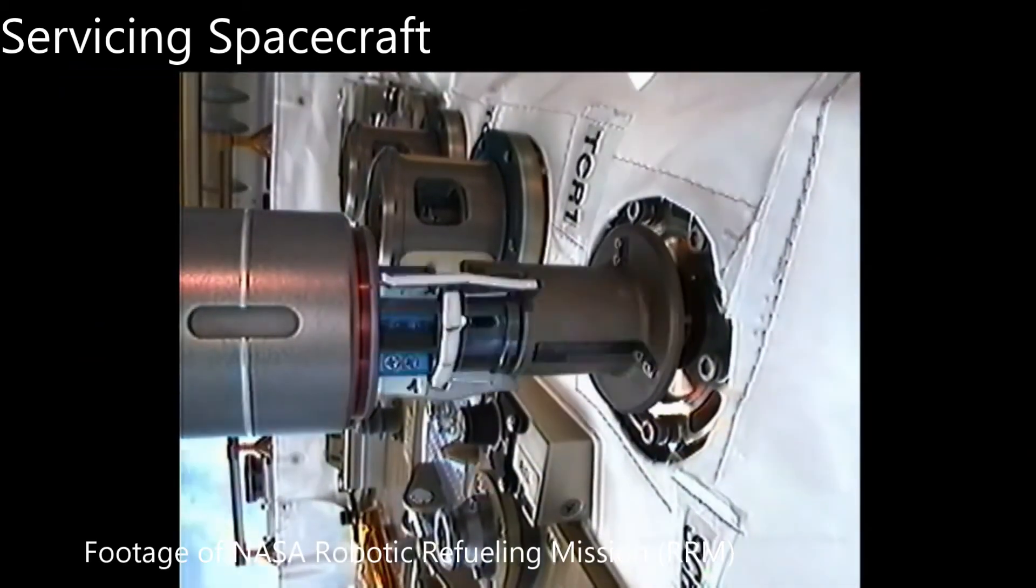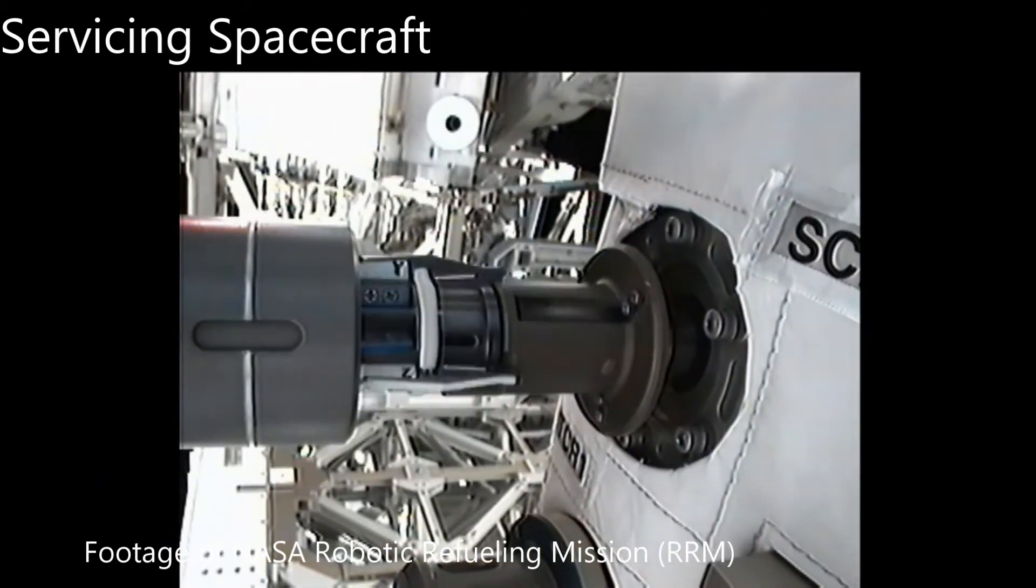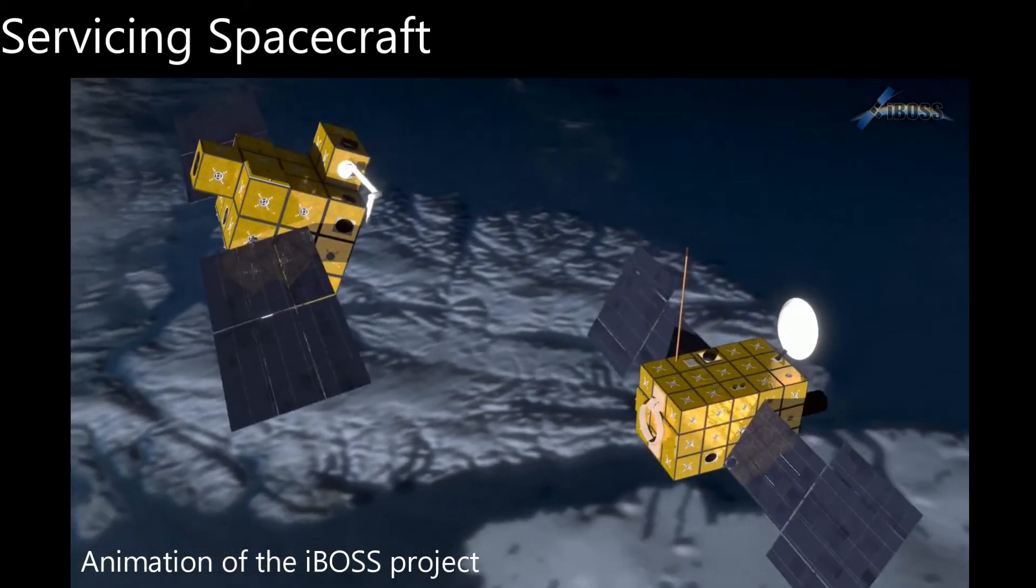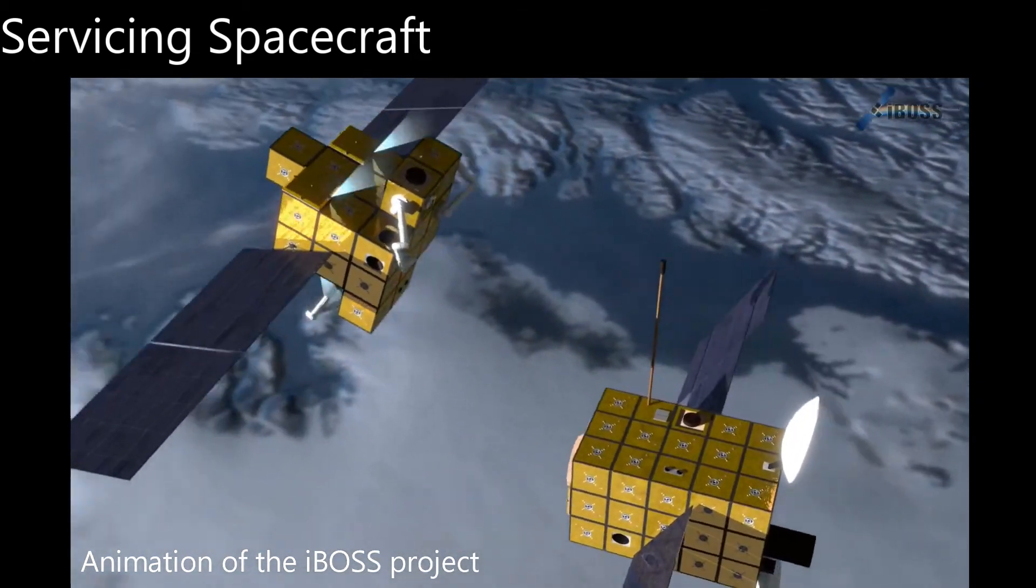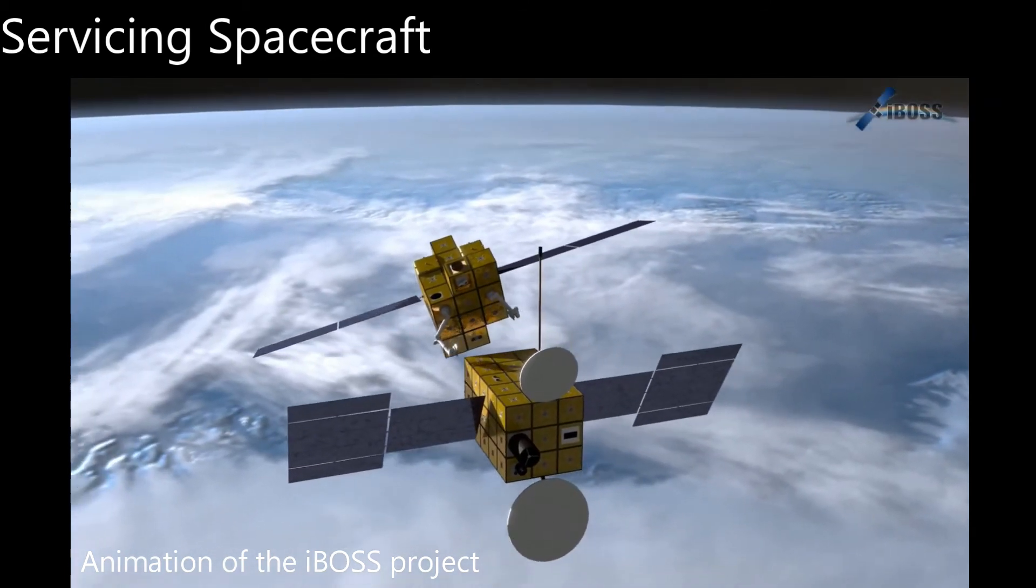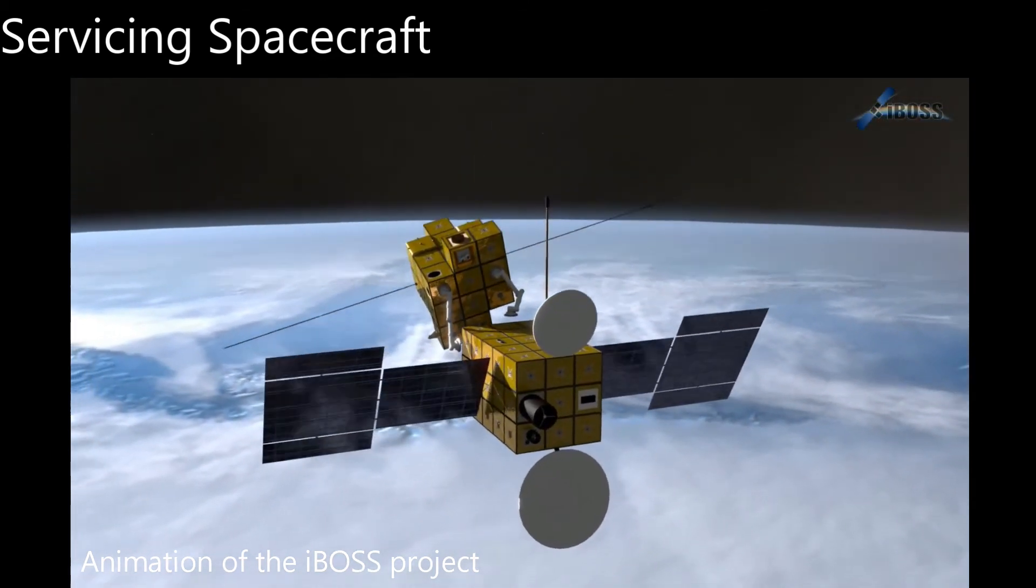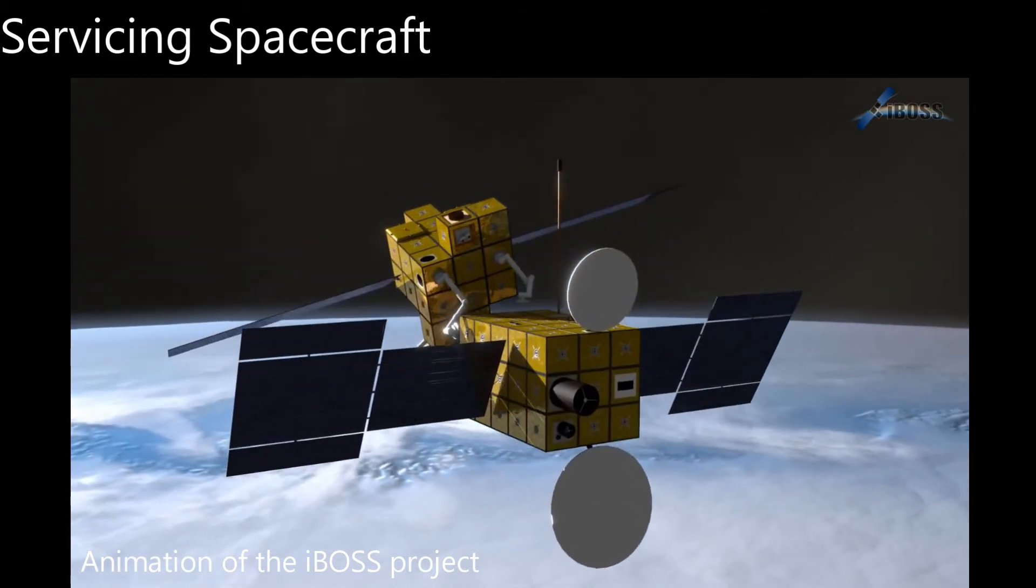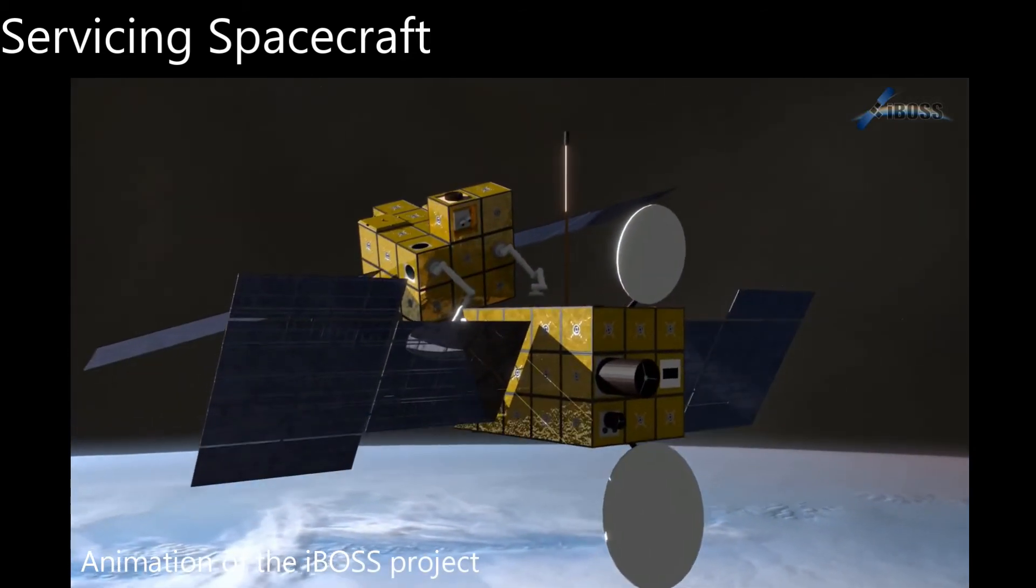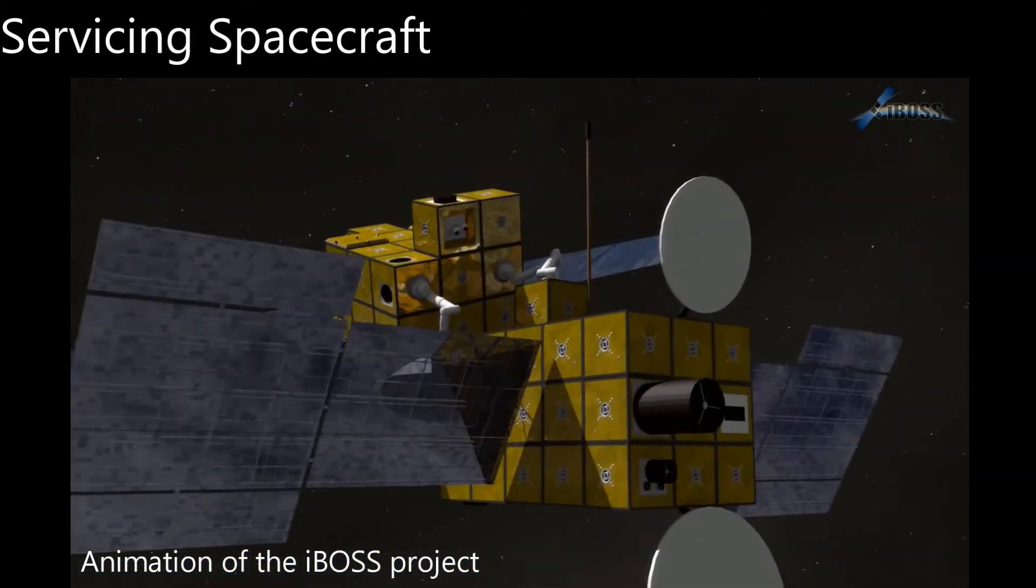The idea is really simple. Basically, an unmanned servicing satellite approaches a customer satellite, connects with it using pre-planned interfaces, makes adjustments such as updating hardware modules or refueling the spacecraft, and then leaves. This approach cannot only be used to increase satellite life, but can also help bring to life satellites that might have been inserted to the wrong orbit, or require tugging into a different location within their orbits.